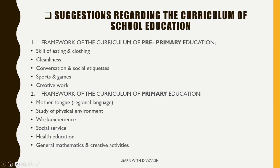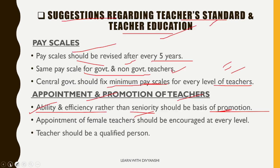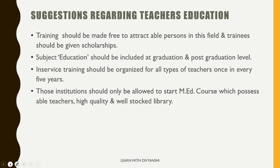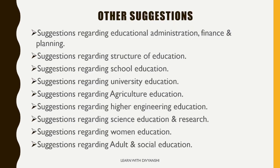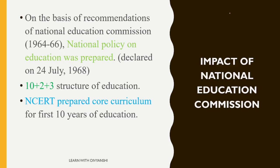There are a total of 23 suggestions in Kothari Commission, of which we have covered the most important ones. Other suggestions include those regarding the structure of education, school education, university education, women's education, and adult and social education.